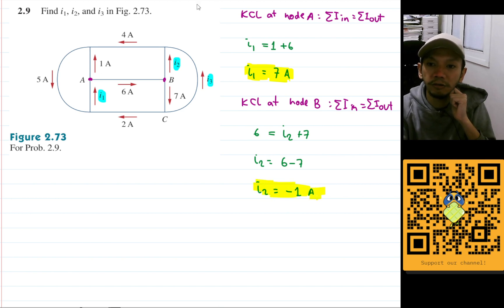And now we need to find out i3. Yeah, i3. I think the easiest way is to use this node here, so node C, but you can also do KCL at this node here which is node D.